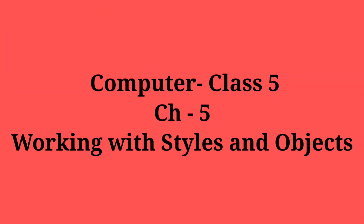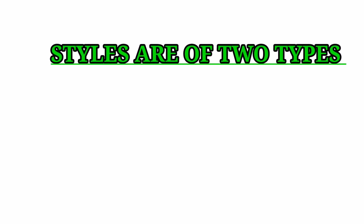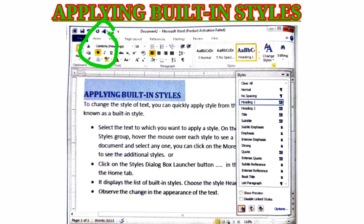Today I am explaining Class 5, Chapter 5: Working with Styles and Objects. A style is a predefined combination of formatting features — font style, color, and size of the text — that is applied to the selected text in a document to quickly change its appearance. Styles are of two types: character style and paragraph style.